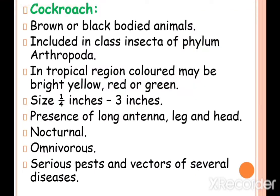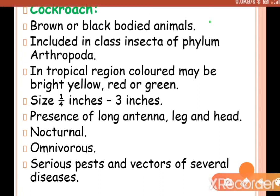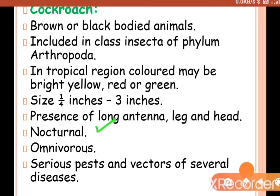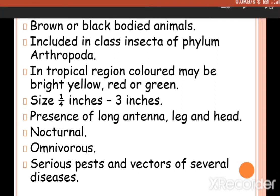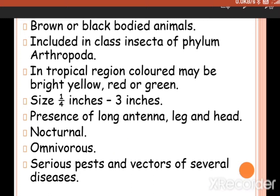Regarding general features, cockroaches are brown or black bodied animals included in class Insecta of phylum Arthropoda. In tropical regions the color may be bright yellow, red, or green. Size may vary from one-fourth inch to three inches. They have long antennae, legs, and a head. Cockroaches are nocturnal animals — active during nighttime and sleeping during daytime — and they are omnivores, obtaining nutrients by feeding on both plants and animals.